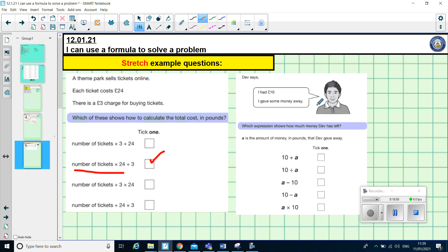The next question. Dev had £10. He gave some money away. Which formula shows how much money Dev has left? It says, A is the amount of money in pounds that Dev gave away. Pause the video and see if you can work out which is the correct answer. Hopefully, you spotted its answer four here. Dev had £10. So, he started off with £10. He gave some money away. And the amount of money he gave away, we're calling A. So, £10. Take away the money he gave away. Take away A. So, it has to be that formula.